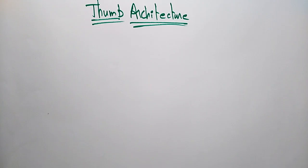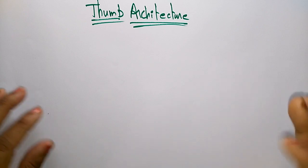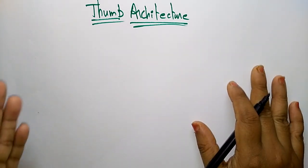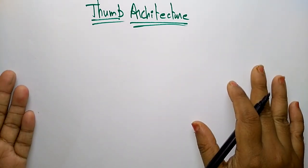Hi students, welcome back. Coming to the next topic in the subject Embedded Systems: Thumb Architecture. Before going into the Thumb architecture, let me give an overview of what the use of this Thumb is. There are different types of ARM processors — it may be the ARM, the Thumb, or Jazelle.